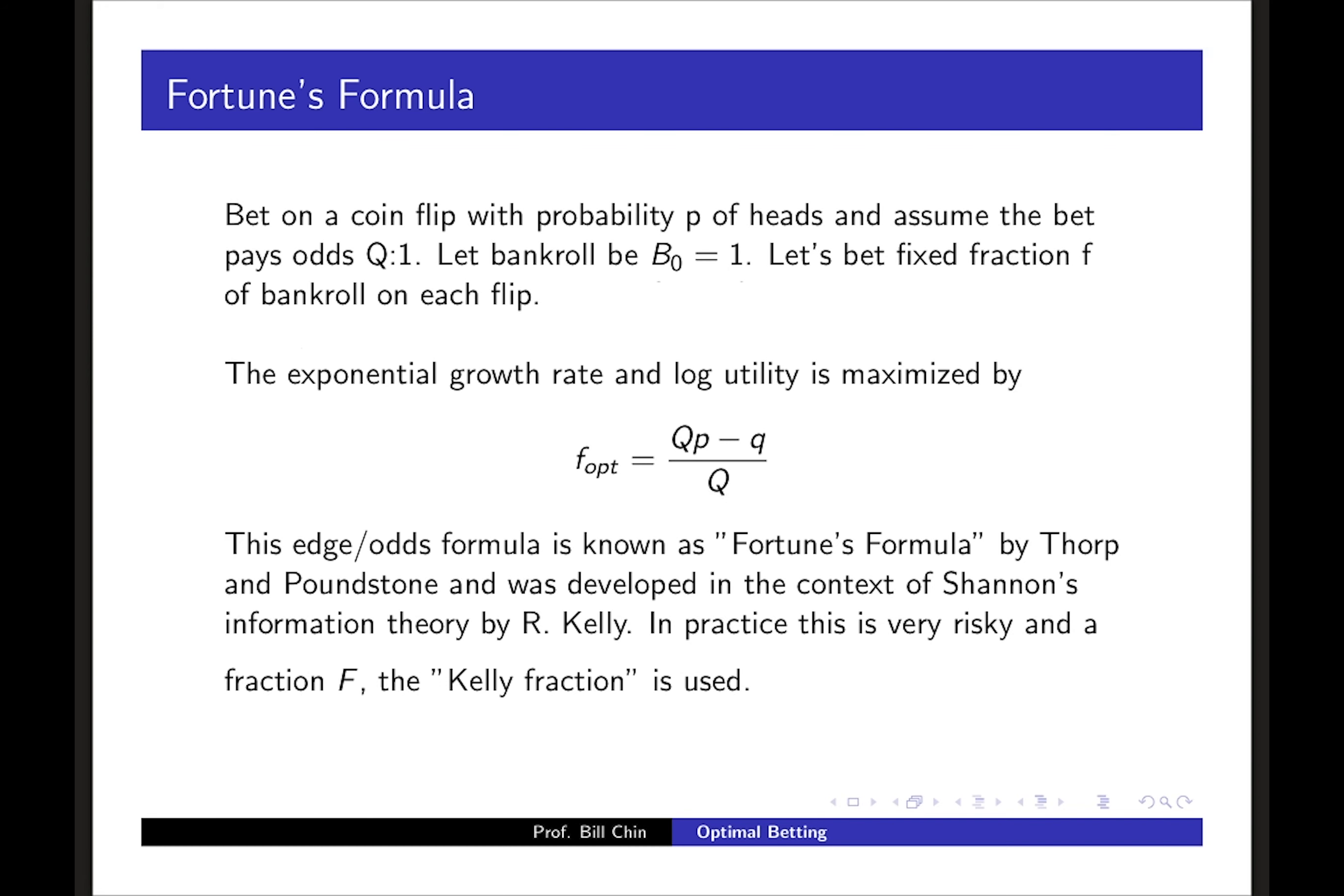In practice, if you use this formula it's considered to be super risky and so practitioners bet some scaled down fraction of this optimal amount called the Kelly fraction. This fraction f corresponds to using an isoelastic utility function or a constant relative risk aversion. f = 1 corresponds to the optimal log utility, so the fraction f is an index of risk aversion. If you don't have an advantage in the bet, well then your optimal bet is zero.